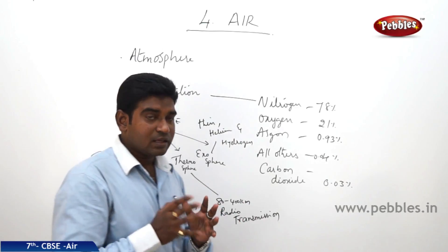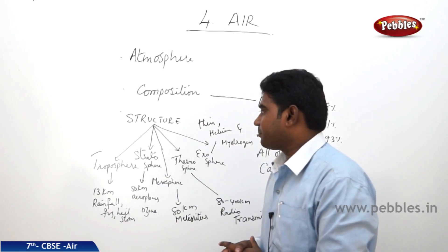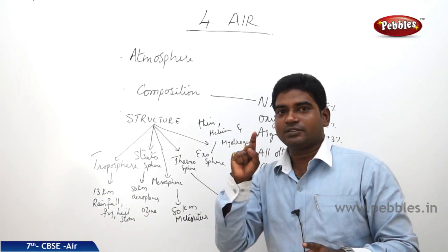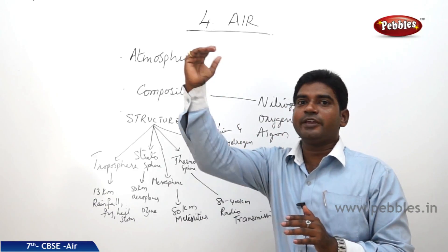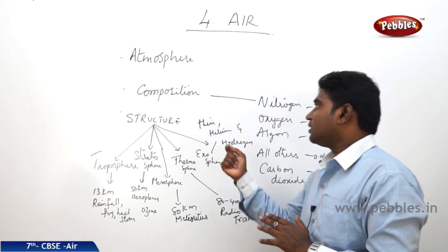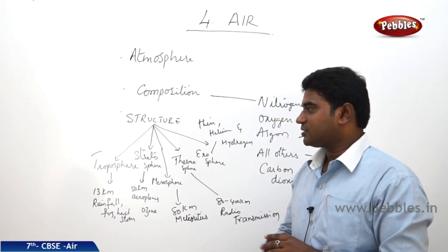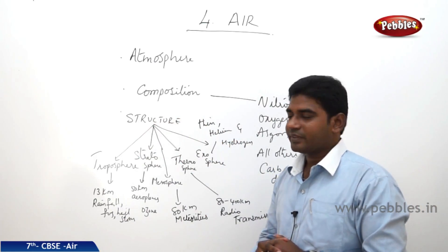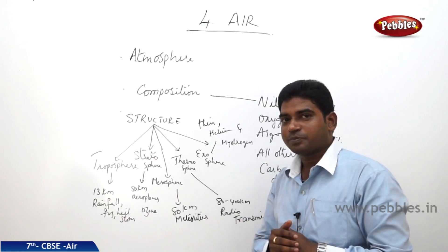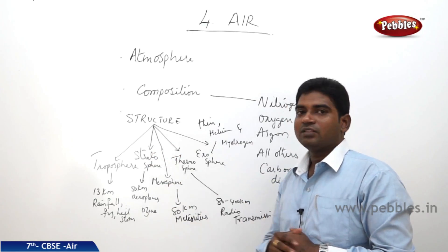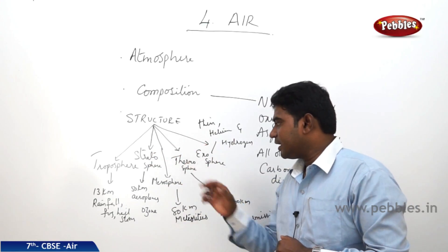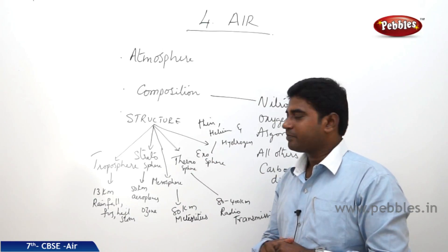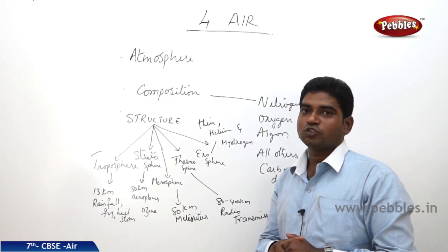Now coming to the structure of the atmosphere — how the atmosphere is present around the earth and from the earth till how many kilometers we have the atmosphere. It is divided into five layers. First layer: the troposphere. Second layer: the stratosphere. Third layer: the mesosphere. Fourth layer: the thermosphere. And the fifth layer: the exosphere.